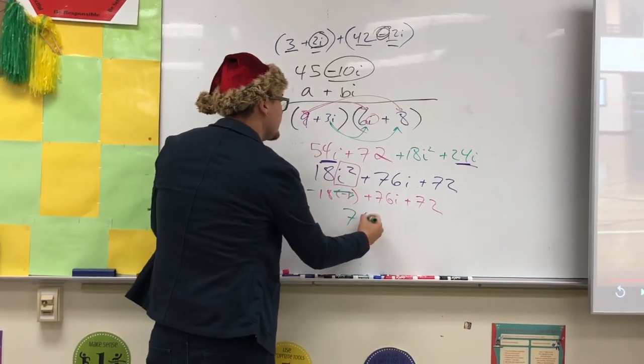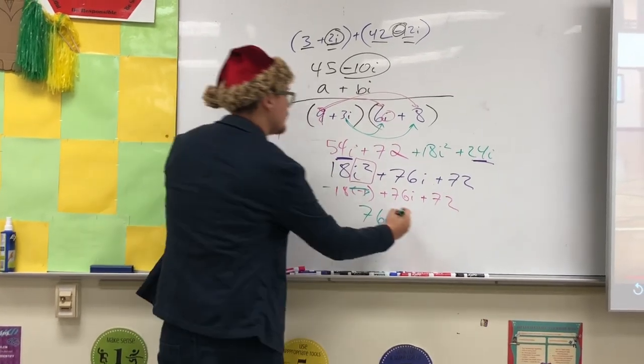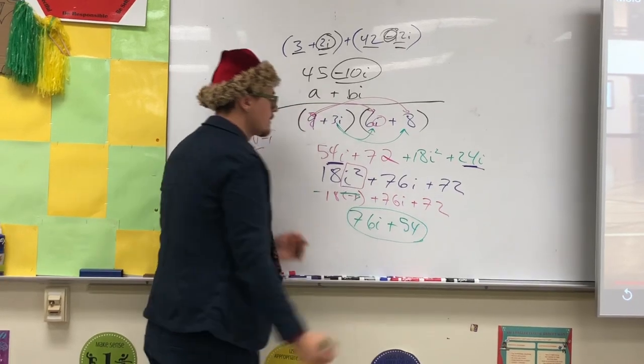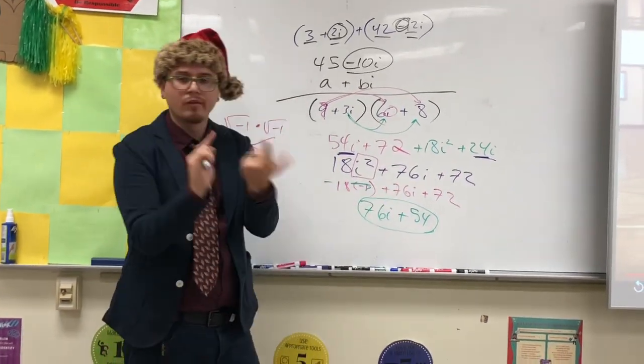So you get 18 times negative 1 plus 76i plus 72. I'm going to skip a step here because I'm tired of writing. This is obviously negative 18. Combined like terms, you get 76i plus 54. That's your new complex number in bi plus a form. Order doesn't matter.